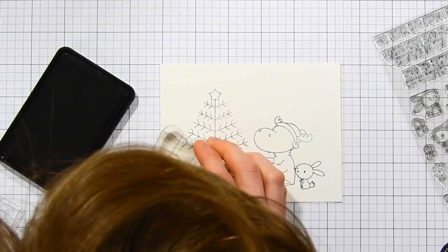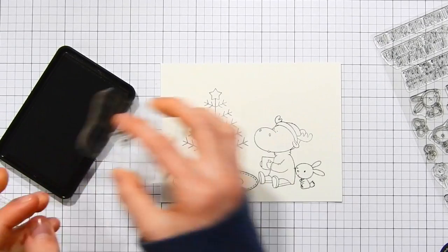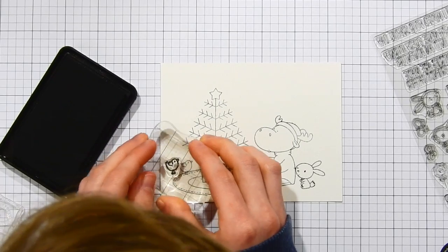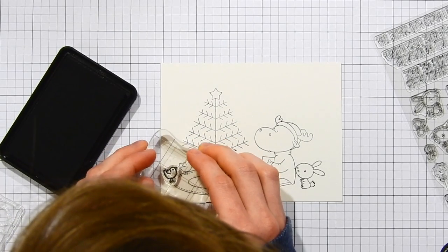I'm also going to stamp a few friends with him so I'm using the Sweet Forest Friends stamp set from My Favorite Things. I'm stamping the little bunny and also a few little birds.